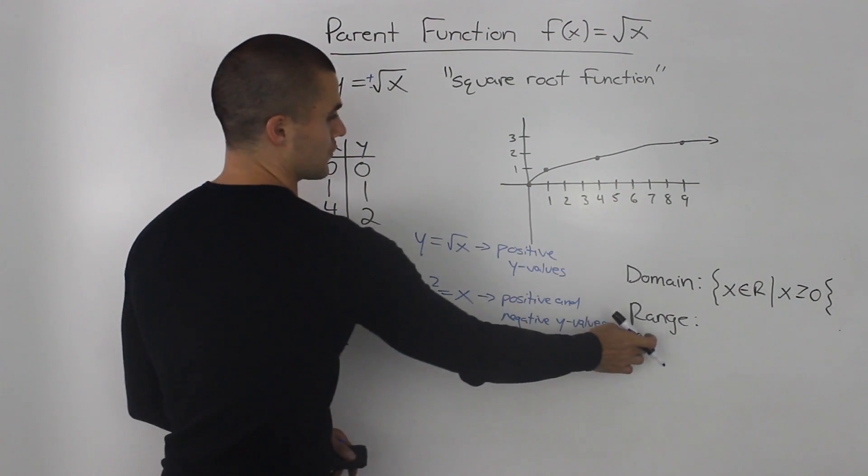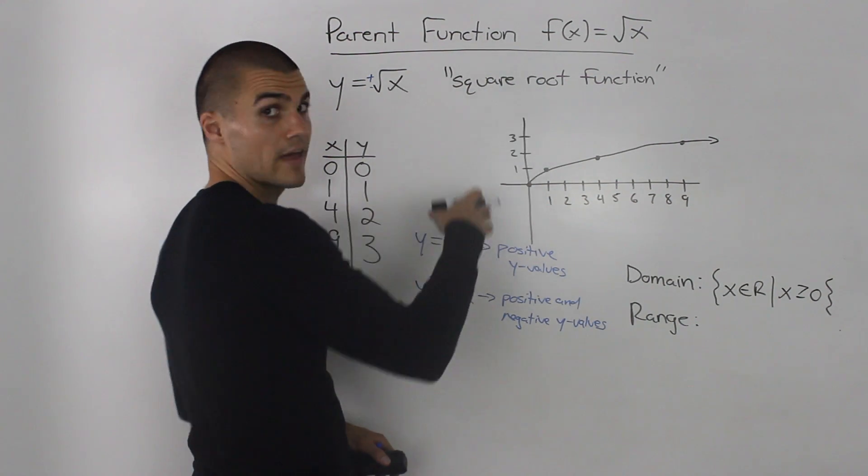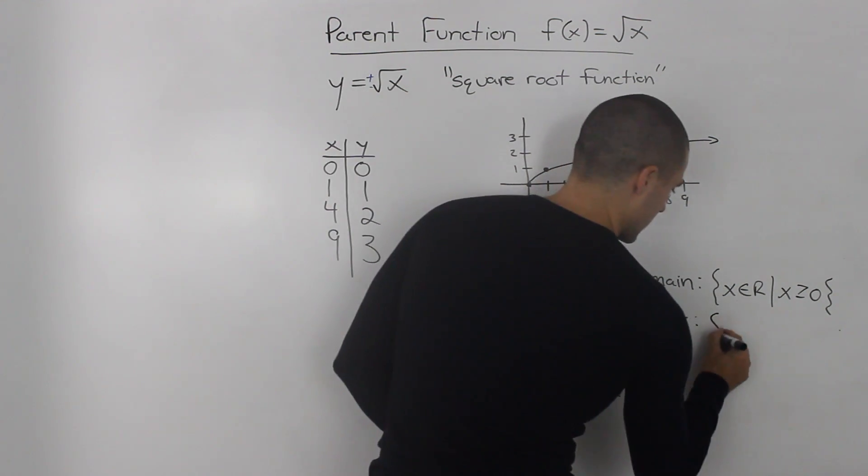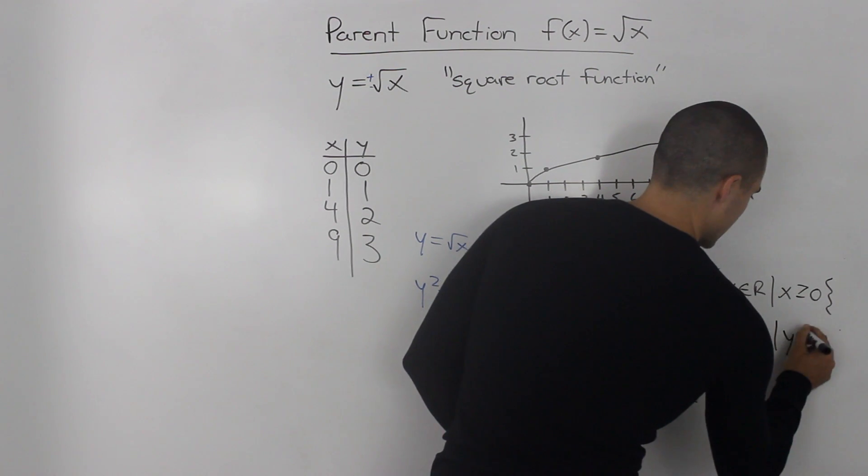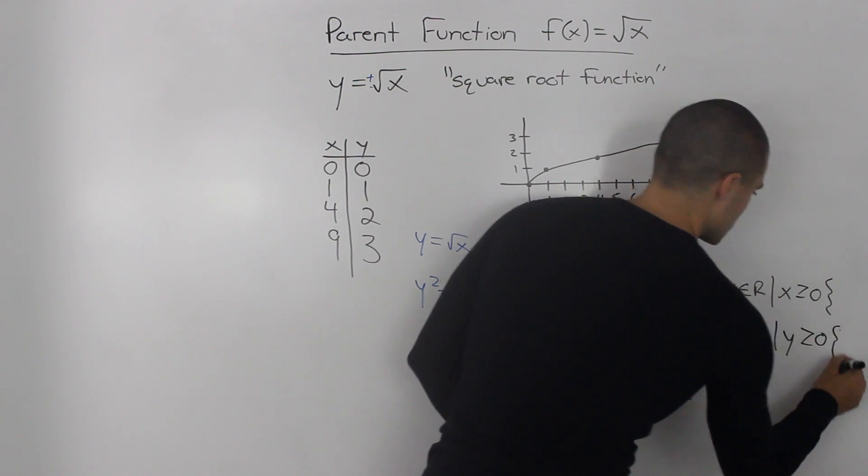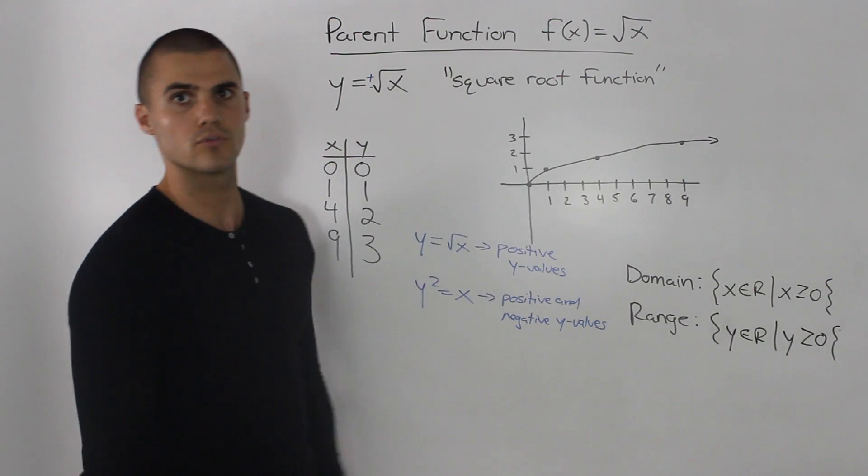And then if you notice for the range, the y values, same thing, they can be zero or greater than zero. So same thing, y can be any number as long as it's greater than or equal to zero. So that's the domain and range of our square root function.